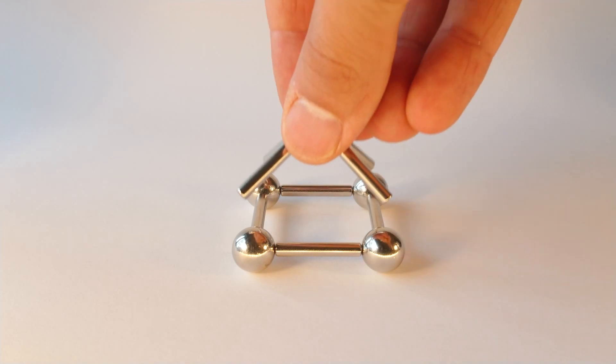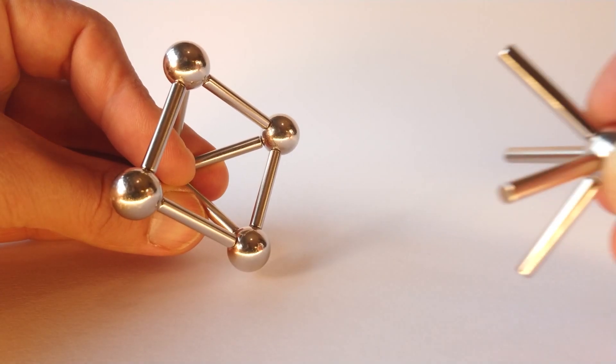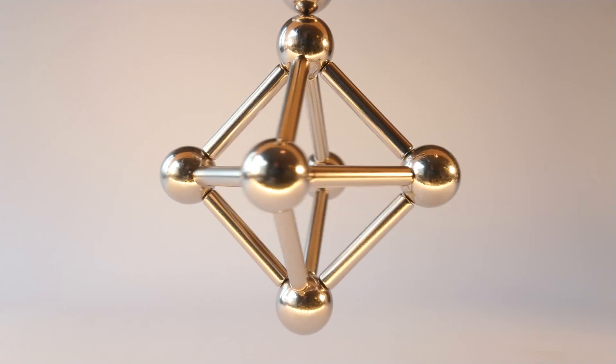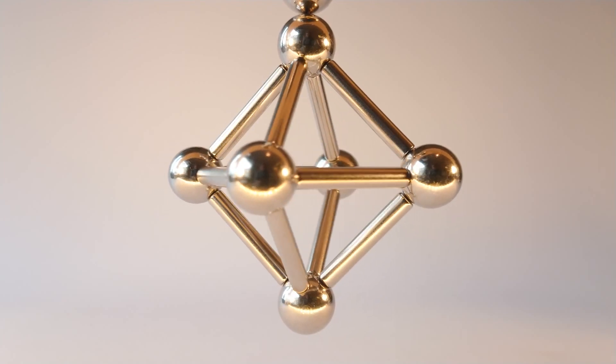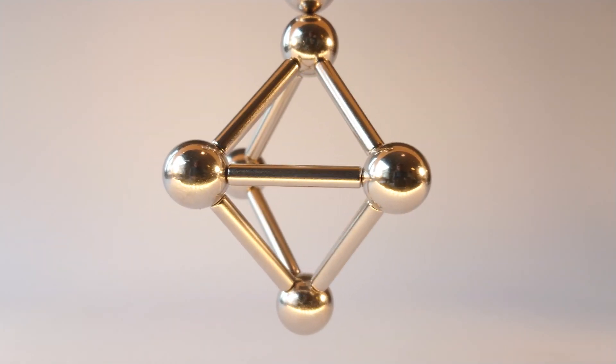Octahedron consists of eight equilateral triangles with four of those triangles meeting at each corner. It is, in fact, the only one of the platonic solids to have an even number of faces meeting at single vertex.